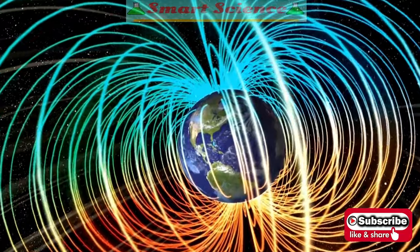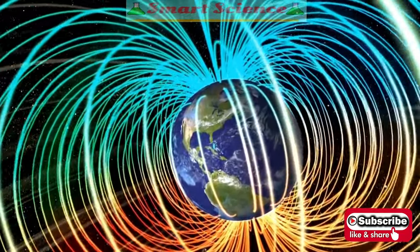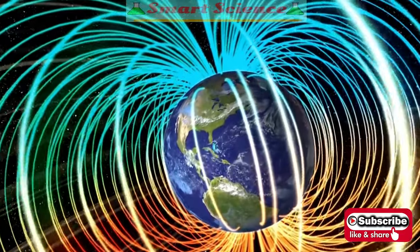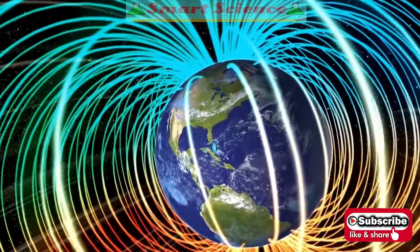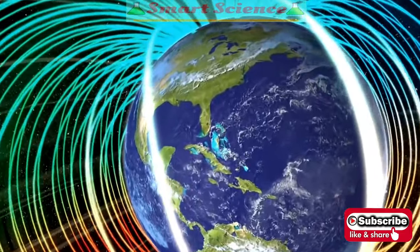Creating this global magnetic shield required special conditions. Earth had to be large enough to have a molten core and had to rotate fast enough to produce an electrical current that generates the planet's magnetosphere.